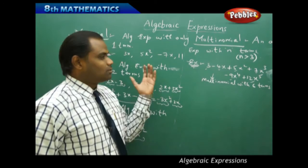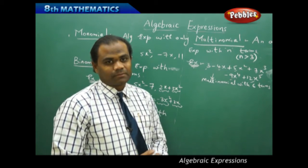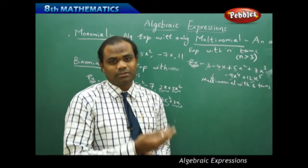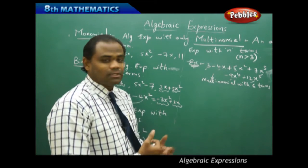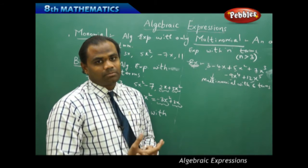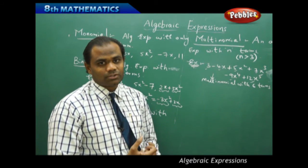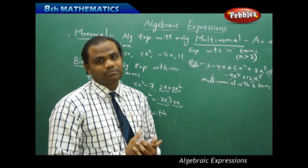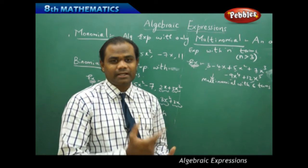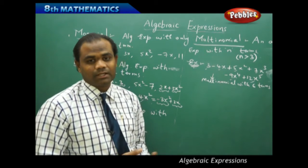Based on the various types of algebraic expressions — monomial, binomial, trinomial, and multinomial — we will now see how to add and subtract different algebraic expressions using like terms and unlike terms. First, we will see what exactly are like terms and unlike terms.